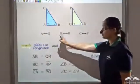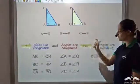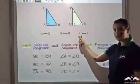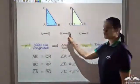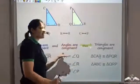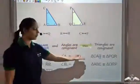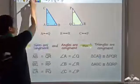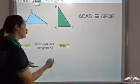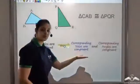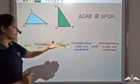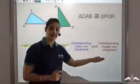A corresponds to Q, B corresponds to R, and C corresponds to P. Similarly, triangle ABC would be congruent to triangle QRP, since the vertices must correspond. The converse also holds: if two triangles are given as congruent, then the corresponding sides and corresponding angles are also congruent.